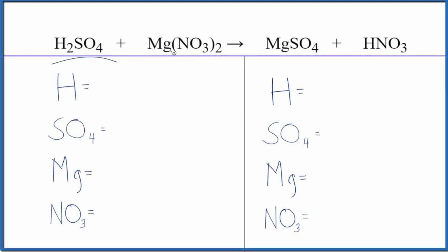Let's balance the equation for H2SO4 plus Mg(NO3)2. This is sulfuric acid, a strong acid, and then we have magnesium nitrate.